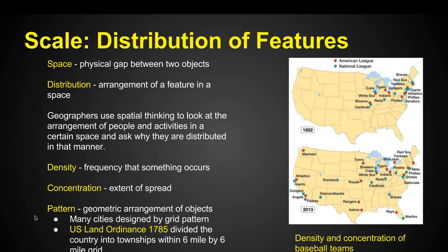Think about pattern — many cities are designed by a grid pattern, where roads cross-section each other, neat and organized. The problem is you have stoplights that lock everybody up. In fact, the U.S. Land Ordinance of 1785 actually did divide the country into townships — little blocks that were six miles by six miles — a grid of the entire country. When we apply these terms that help us look at the distribution of features, it starts to make more sense.